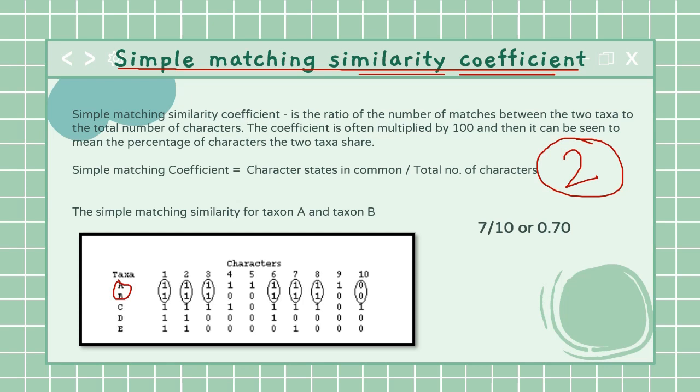I see one is similar, two is similar, three is similar, six, seven, eight and ten - these are seven similar character traits found between A and B.